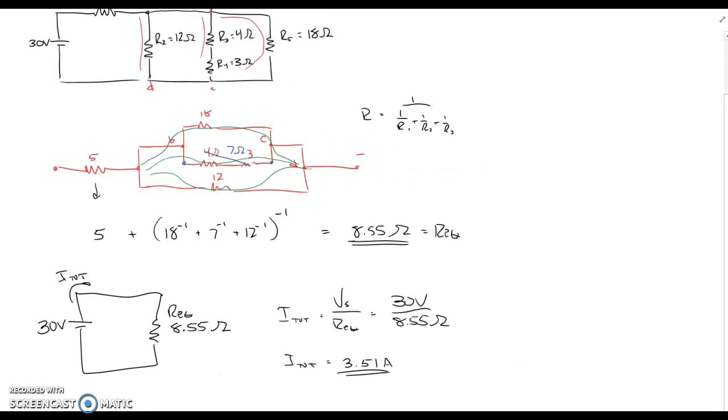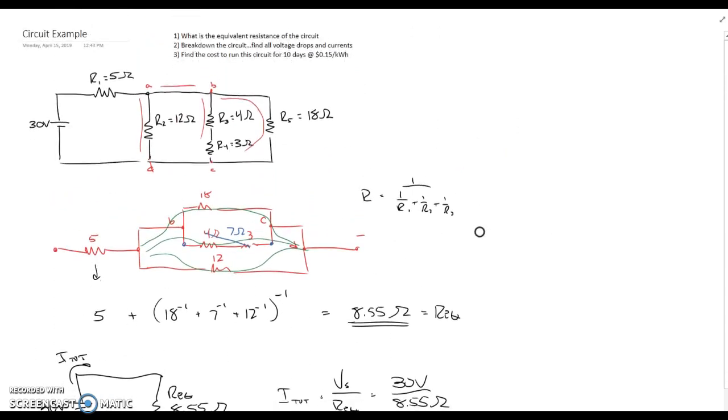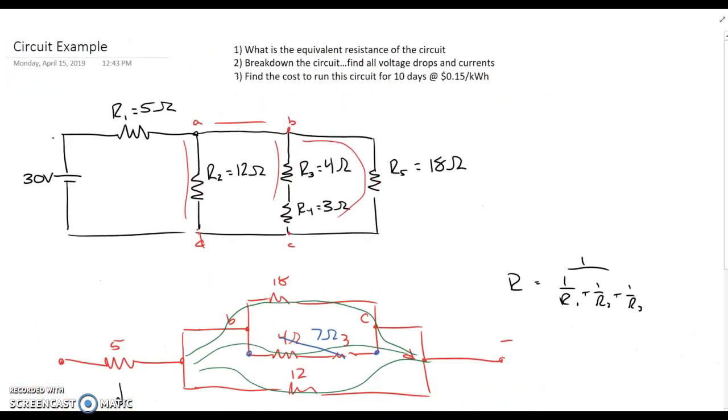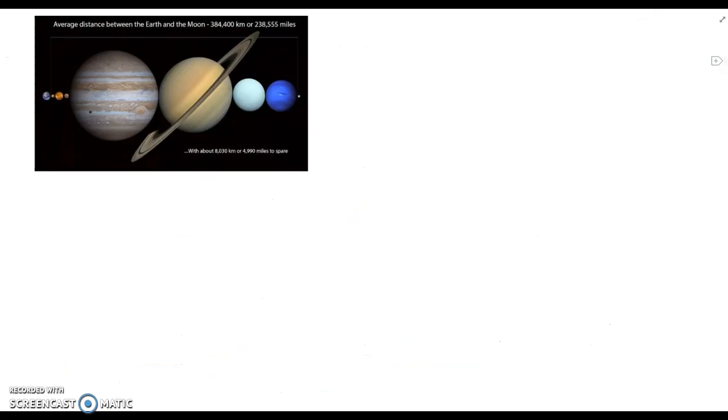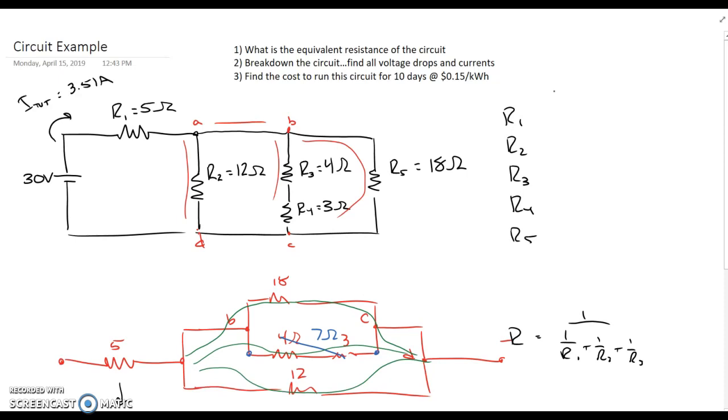So going back to my original circuit, I now know, as I break it down, that the current coming out of the source, I total, is 3.51 amps. So I'm going to create a little table that makes it a little bit easier. Here's our resistors. We have R1, R2, R3, R4, and R5. And each of those is going to have a voltage and a current. So we can create a little table, it's a nice way to organize it, and calculate each of them as we go.